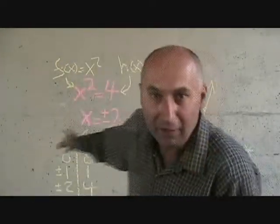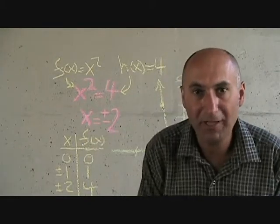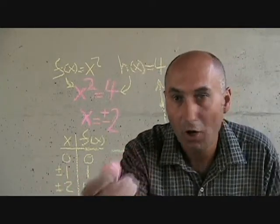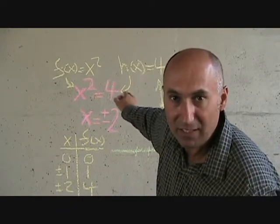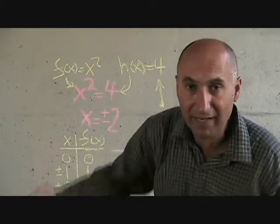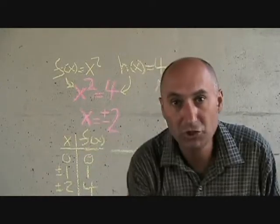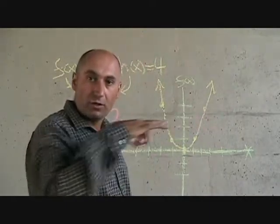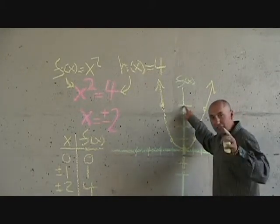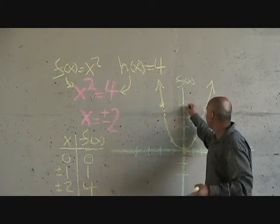Now, h of x is just a line. All that means is y is 4 everywhere. Some people have a hard time with this. All that h of x equals 4 means is that everywhere y is 4, irrelevant of what x is — there is no x term on this side. So if x is 0, y is 4. If x is 2, y is 4. If x is infinity, y is 4. If x is negative infinity, y is 4. So the way you graph this is just as a horizontal line on the y-axis at y equals 4. It's not just a dot — if it was just a dot, that would mean only at x equals 0 is y equal to 4. It's y equals 4 everywhere.